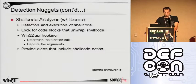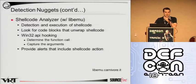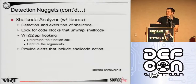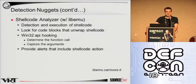Some noteworthy things LibMU can do include Win32 API function call hooking. You can also look for blocks that unwrap shellcode and profile shellcode behavior. The profiling of shellcode behavior is especially of interest to us because it allows us to generate alerts that can describe the intent of shellcode — the goal that the shellcode was trying to achieve and what those instructions were intended to do.